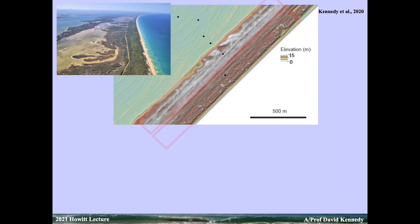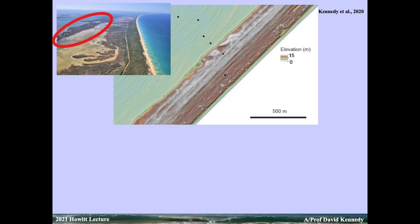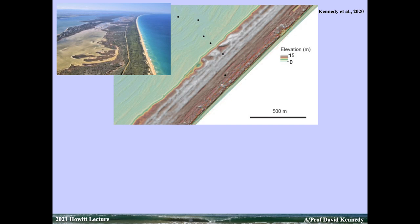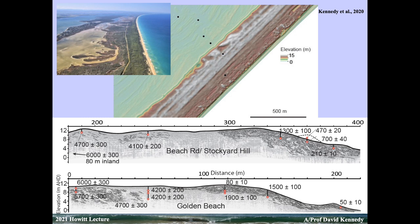Using LiDAR aerial laser surveying, we can see two quite distinct phases of dunes — what we'd call foredune ridges, old previous back-of-beach positions. The beach has been progressively building out through time — a positive sediment budget. This shoreline here is actually from 125,000 years ago during the last interglacial period, when sea levels were three to five metres higher than present. That's where the shoreline was during high sea levels.